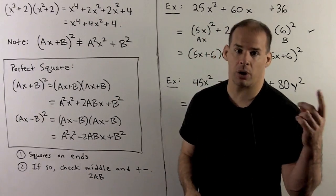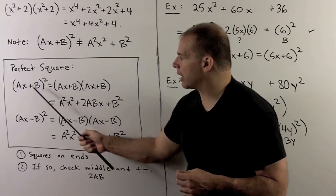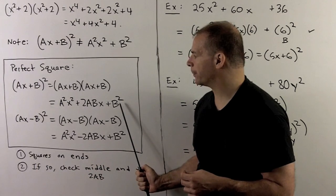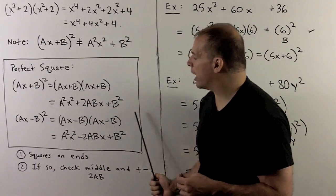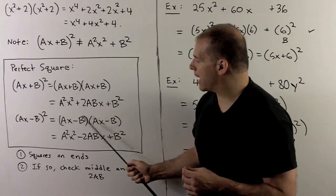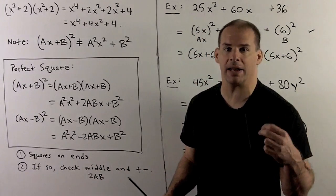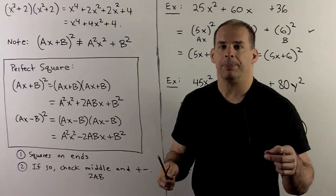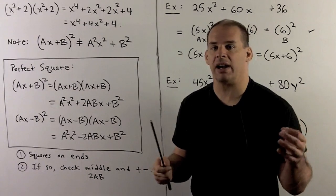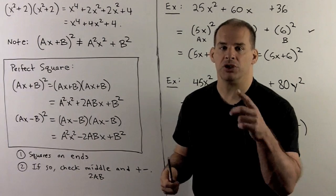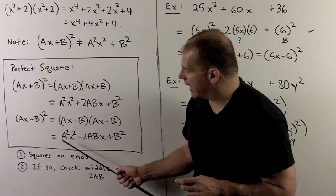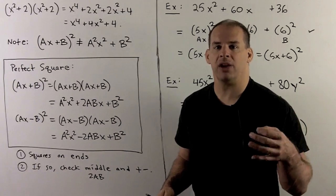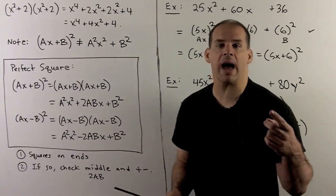This leads to our next special case: perfect square trinomials. If we take (ax + b)² and write it out, we FOIL to get a²x² + 2abx + b². For (ax − b)², the result is the same except the middle term becomes negative; note that (−b)(−b) = +b², so only the middle term picks up the minus sign. To identify these, look at the end terms — if they're perfect squares, you have a candidate. Then check the middle term: if it equals 2·(ax)·b, you have a perfect square and can apply the formula.